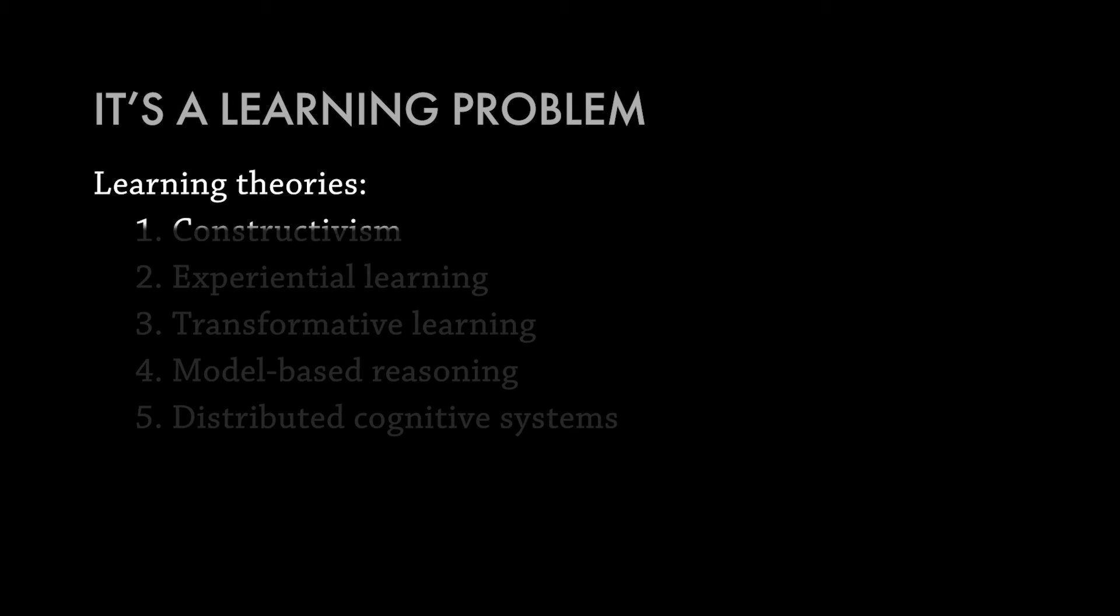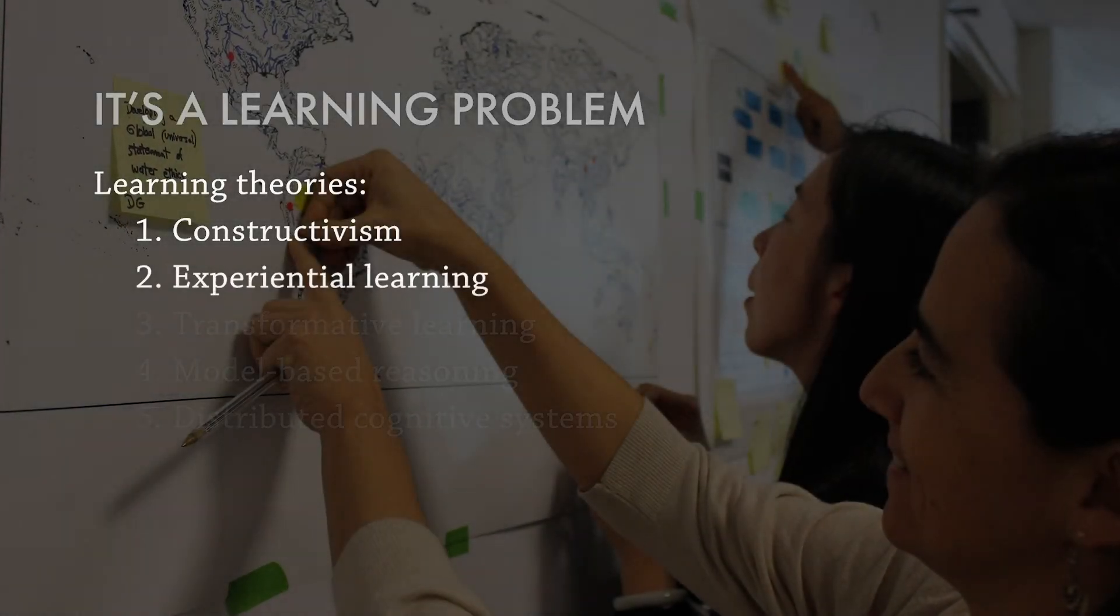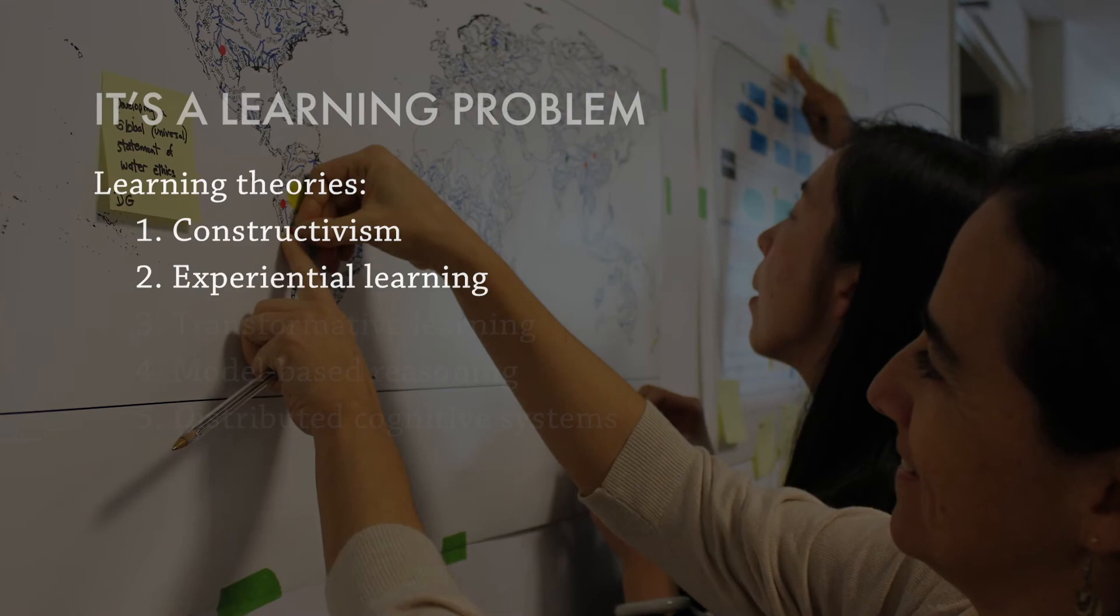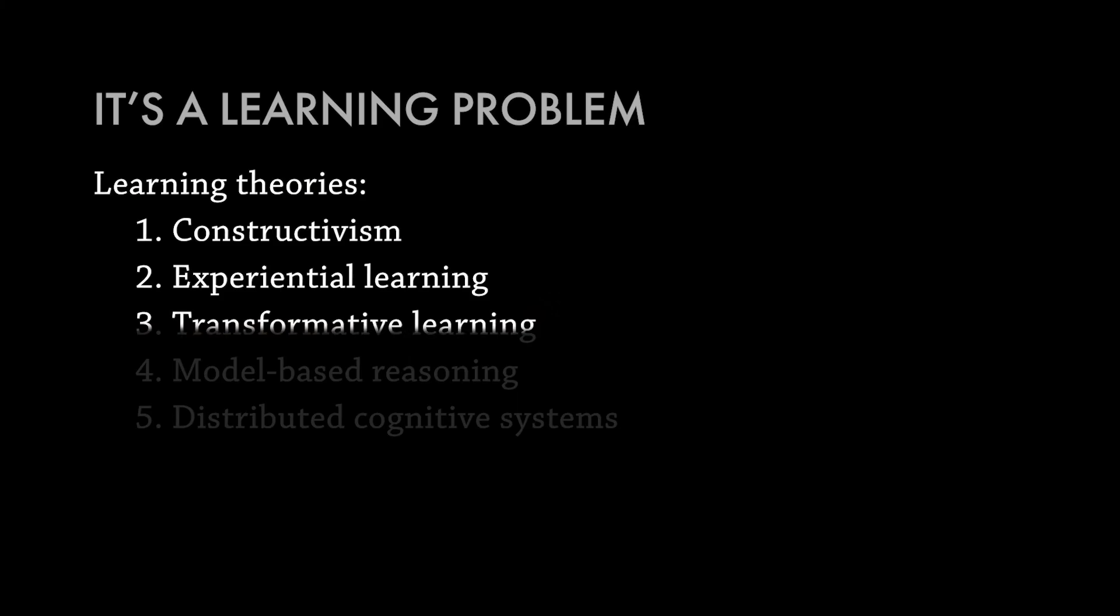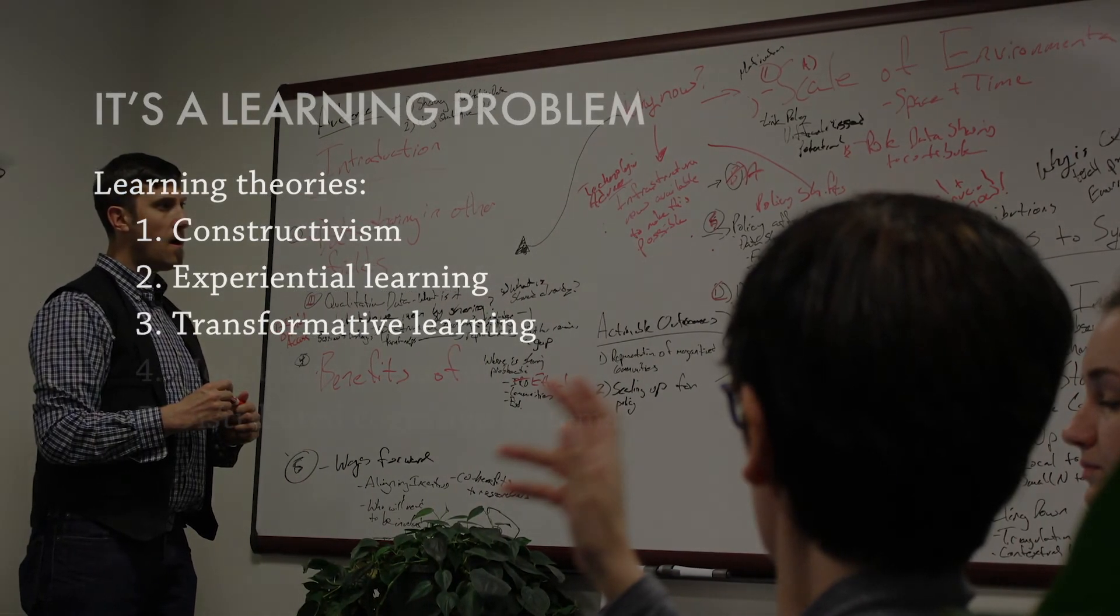In constructivism, you're constructing mental models on the fly all the time. In experiential learning, you're learning from your experiences. Transformative learning, oftentimes it's very disorienting to go into one of these groups. And transformative learning theory talks about how to deal with disorientation, how you make sense out of a world that doesn't make sense to you.